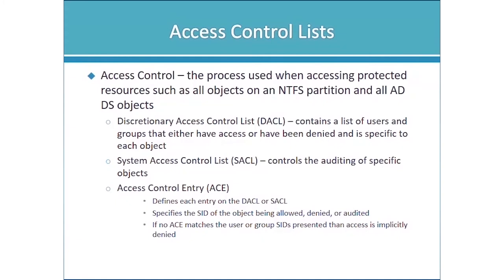Access control is the process used when accessing protected resources. On Windows networks, pretty much every resource is protected because we typically use NTFS rather than FAT32. All objects on an NTFS partition have a security descriptor, as do all Active Directory Domain Services objects. The security descriptor has a DACL, which contains a list of users and groups that either have access or have been denied, and that DACL is specific to each object. It also has a SACL — a System Access Control List — which controls the auditing of specific objects.